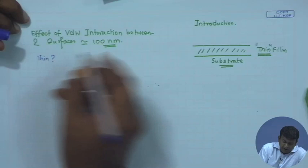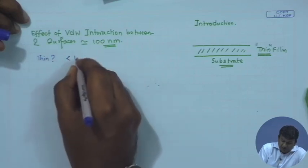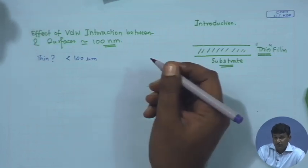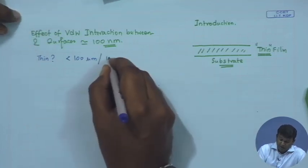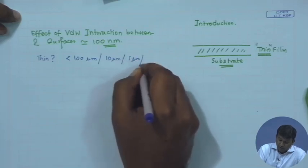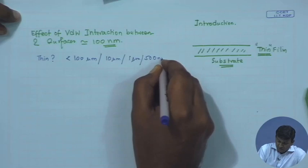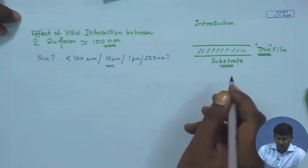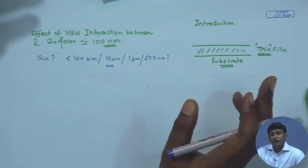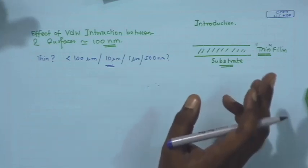Is it a number — less than 100 microns? Note that 70 microns is roughly the width of your hair. So 100 microns is pretty thin, 10 microns, 1 micron, 500 nanometers — what is it? There are different ways to define a thin film, and for different contexts the definition also changes. But for our context, we will consider something to be a thin film not based on any number but based on something else.